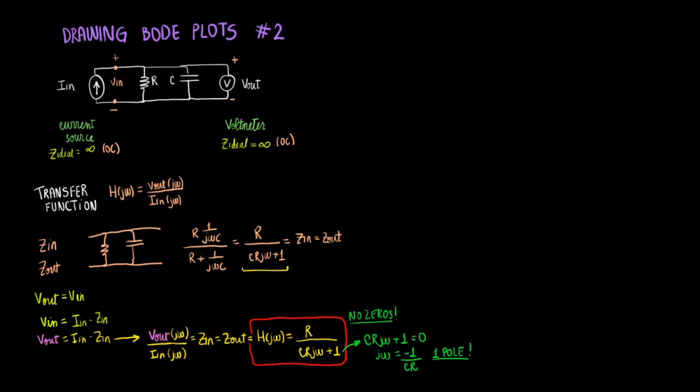Now you can recall that there are two plots whenever we're asked to draw a Bode plot. There will be a magnitude over frequency and a phase angle over frequency plot. From the transfer function, we've already found what the zeros and the poles are. So we can go ahead and draw those plots now.